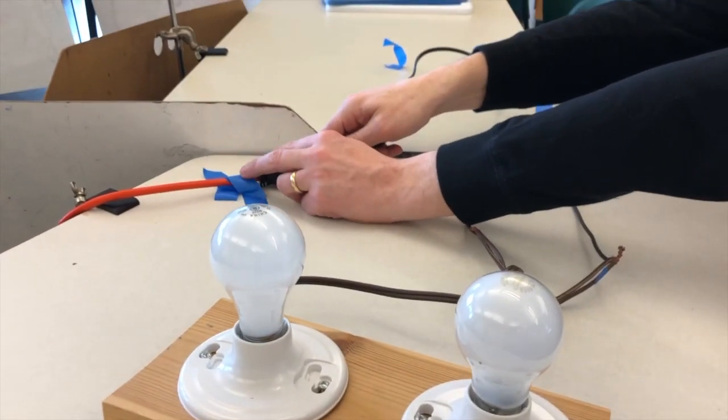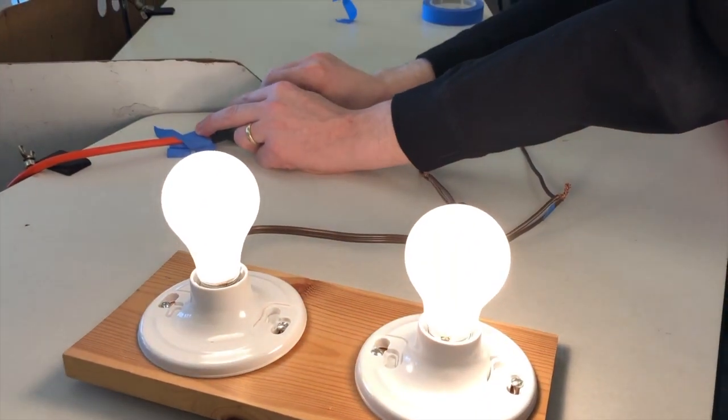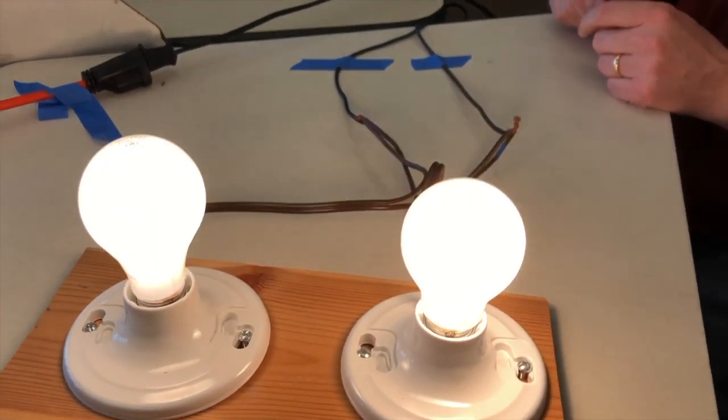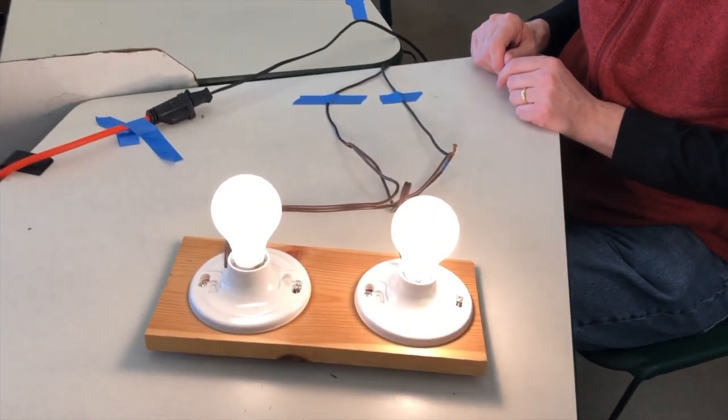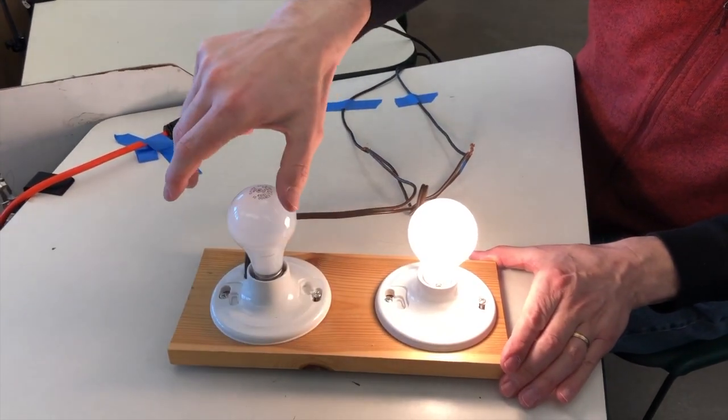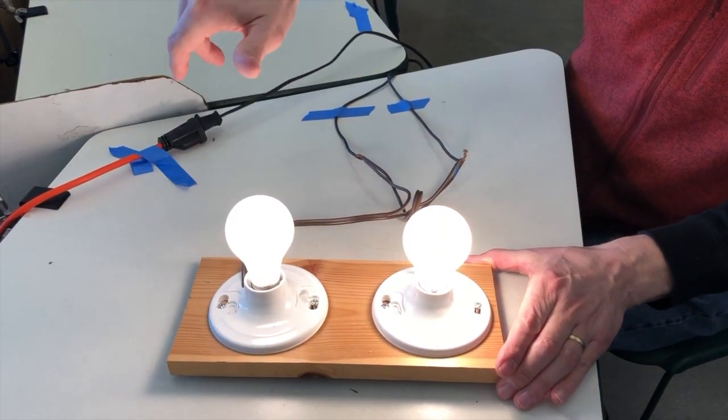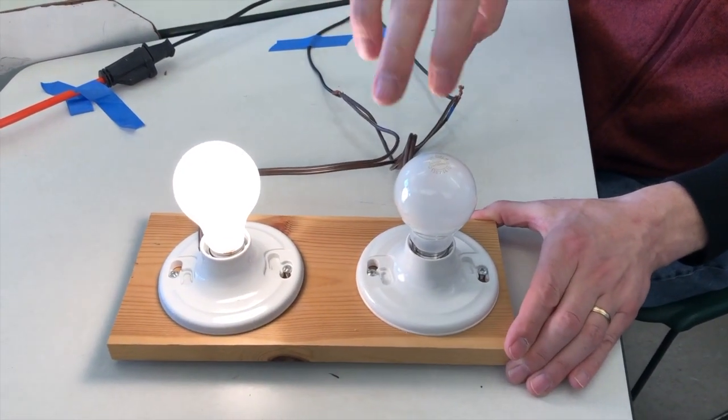This time when we plug the lights in, they are both bright. It's hard to tell from the video which one is brighter, but they should be different. They are very different bulbs. In this case, if I unscrew a bulb, the other one does not go out. Also important, it doesn't get brighter either. Some people think that should happen. It does not.